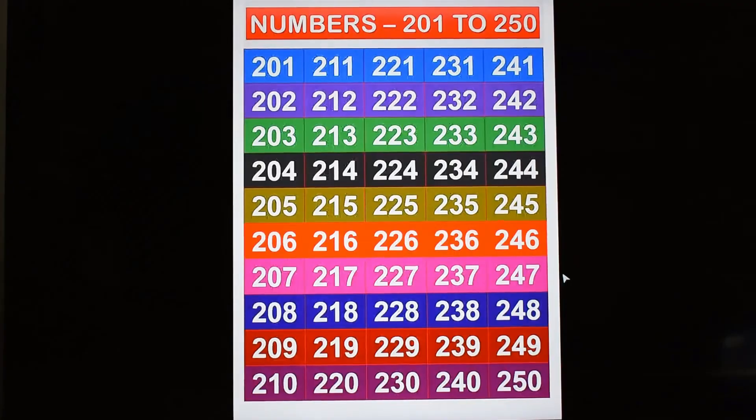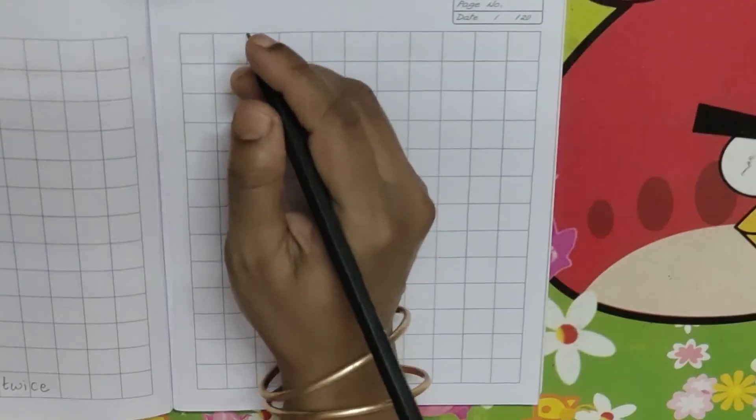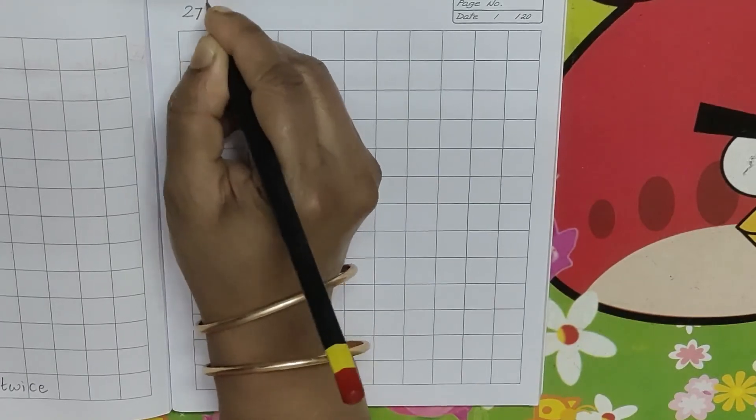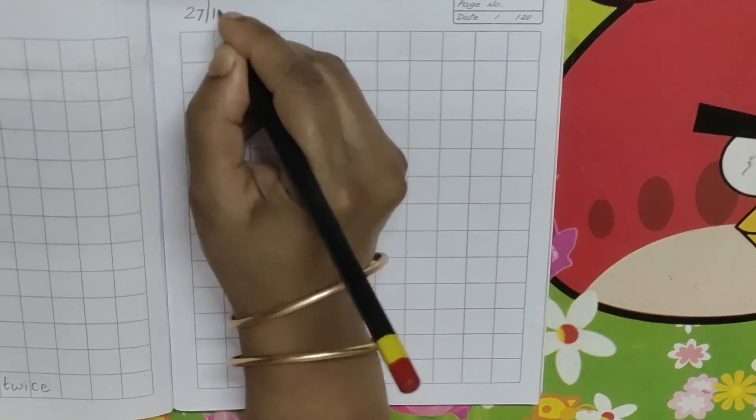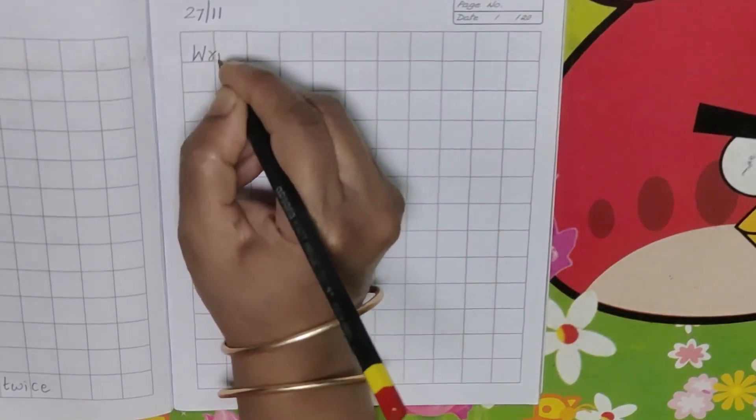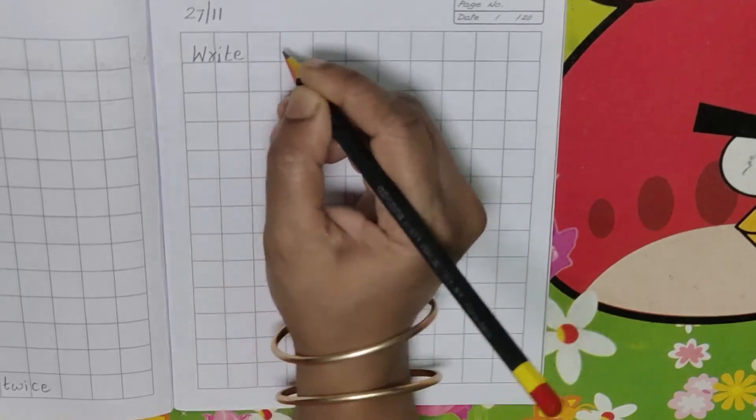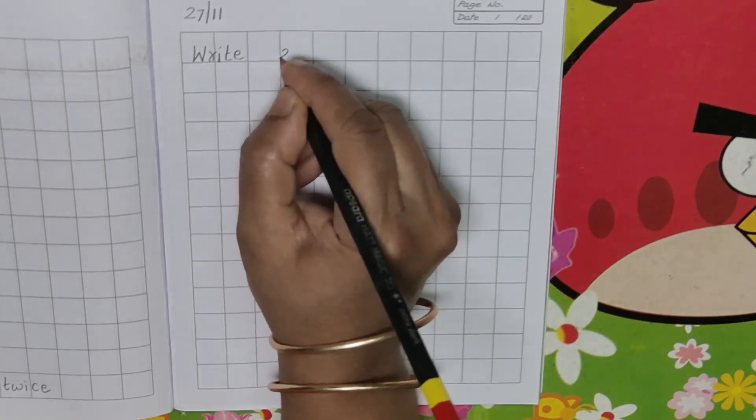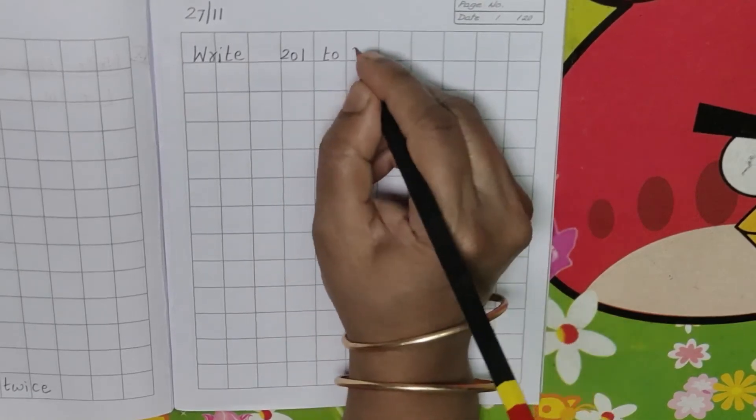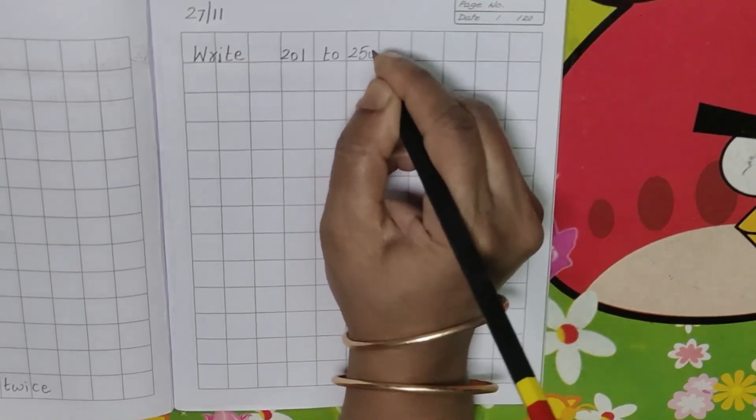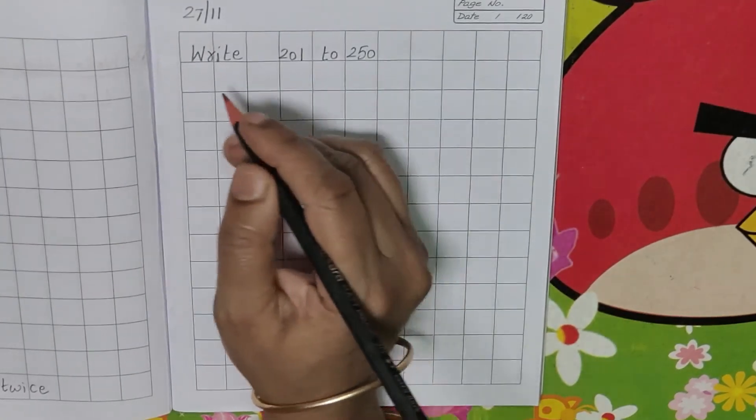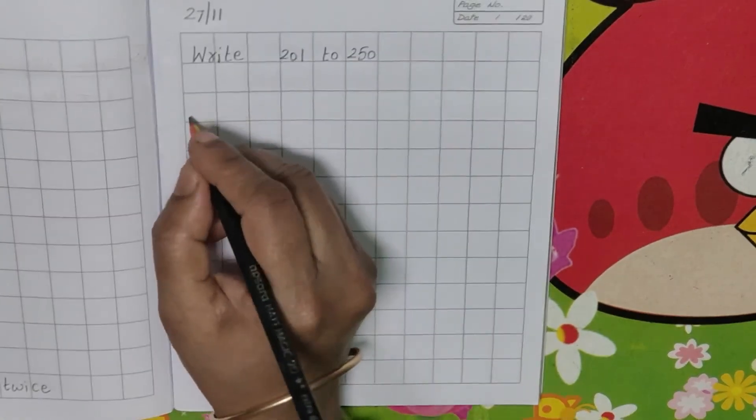Now let's see how to write in the notebook. First, write the date 27/11. Then write the heading in the first line: W-R-I-T-E, write one finger space, 201 to 250. Write 201 to 250. Then leave one line and start in the next line.